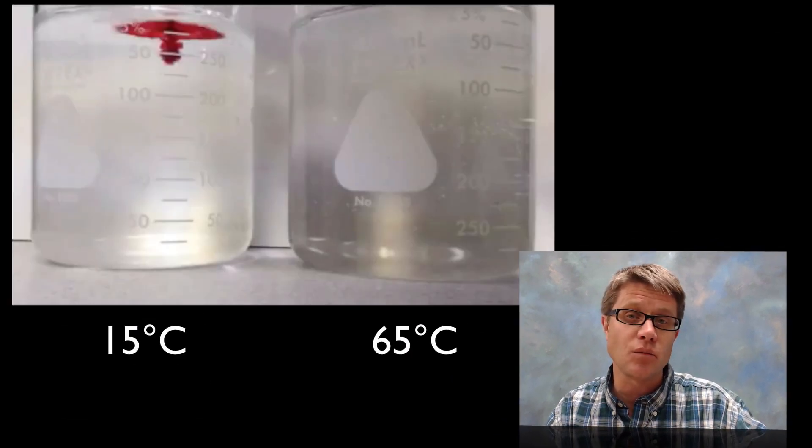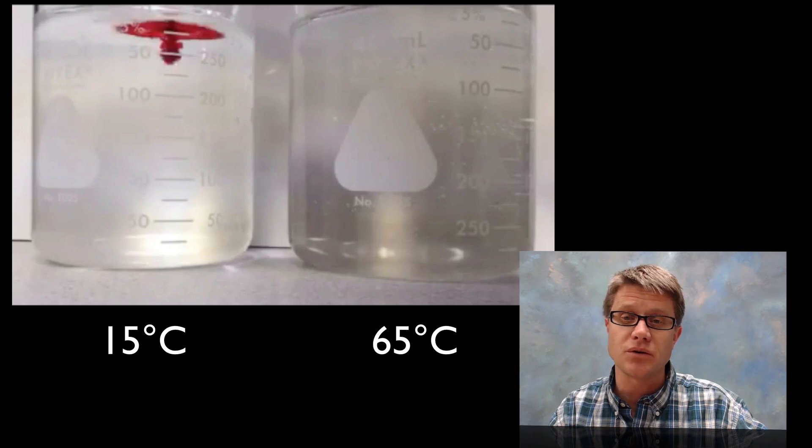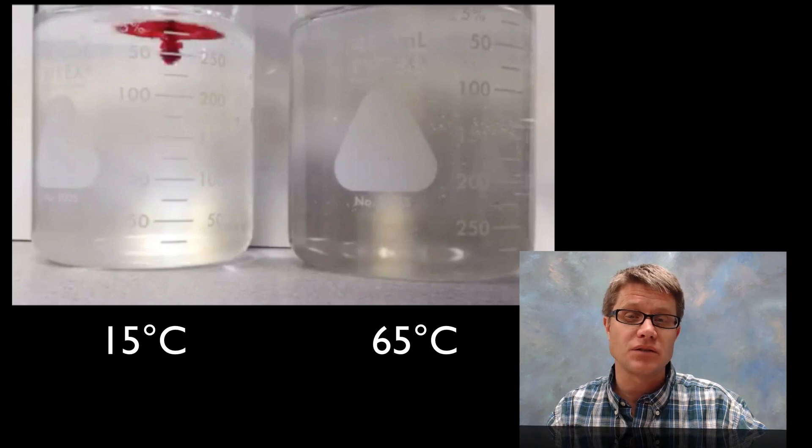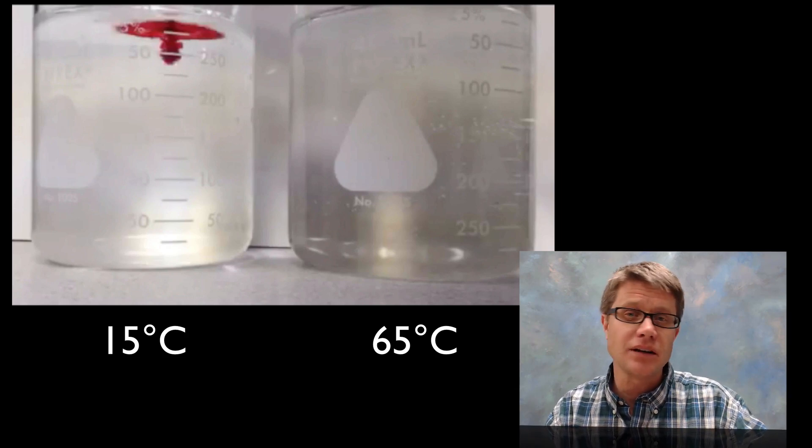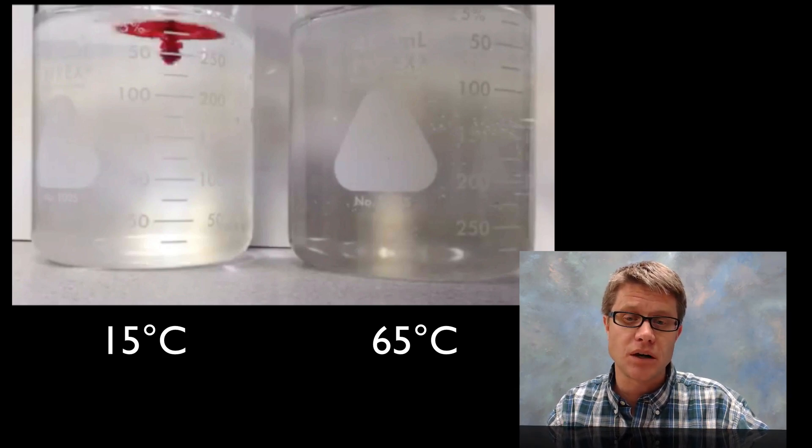In this video what I've done is I've taken some water that's going to be 15 degrees. So I added some ice to it. It's kind of cold. And then next to that I've got water that's at 65 degrees Celsius. So it's going to be pretty hot. I'm going to add a drop of food coloring to each and we're going to watch what happens.